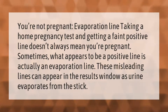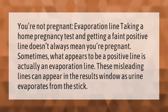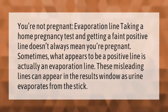Taking a home pregnancy test and getting a faint positive line doesn't always mean you're pregnant. Sometimes what appears to be a positive line is actually an evaporation line. These misleading lines can appear in the results window as urine evaporates from the stick.